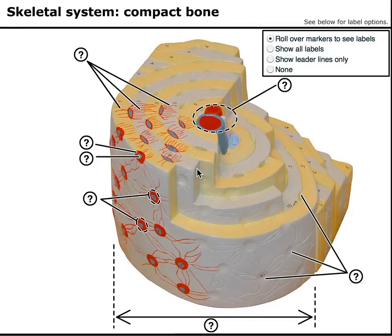Let's go ahead and take a look at an osteon of compact bone. These are the basic functional units of bone — this is what bone is made up of if you zoom in a lot. This will be really helpful before you dive into the histology of bone, and it will give you kind of a map of how a bone is designed.